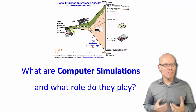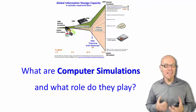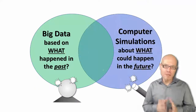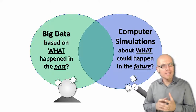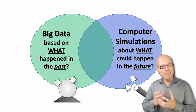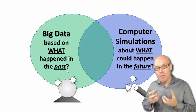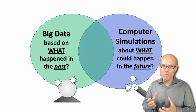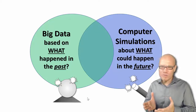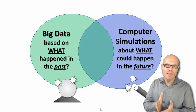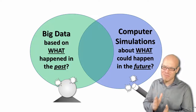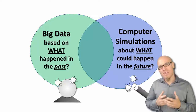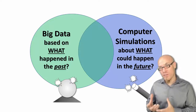What are computer simulations and what role do they play in understanding society better? Big data refers to empirical analysis of society — it's data about what happened in the past. Something has to happen and only then can we record it. Even real-time data is already from the past as soon as you record it. So it's the empirical footprint of what has happened.